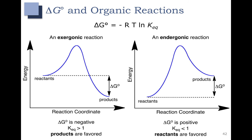In an endergonic reaction, you can see that the products are higher in energy than the reactants. In this situation, delta G is positive, meaning that we had to put energy in to get this reaction to work. Our Keq is less than 1 in this situation. The reactants are favored, and so this reaction is an uphill reaction — we need to put energy in to get this reaction to go.